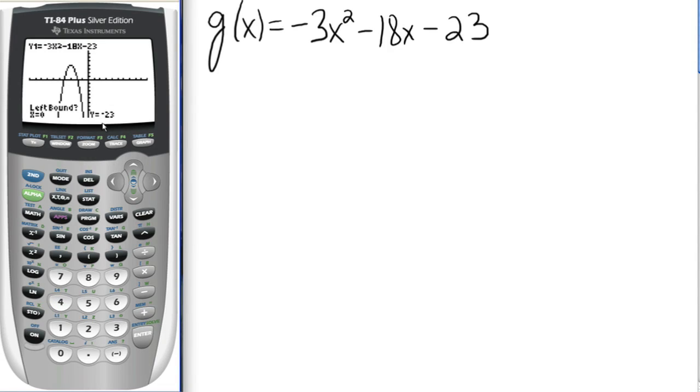Right now your cursor is located at 0, negative 23, which is pretty far down here. So we need to move it back up. Using the right arrow keys and the left arrow keys, we can move our cursor. Now we need to move it so that it's to the left of this maximum point, because we want the left bound. So if this is the maximum point, our cursor is to the left of it. Hit enter.